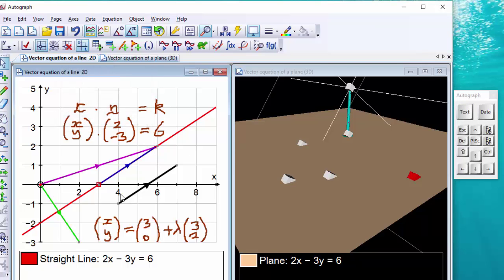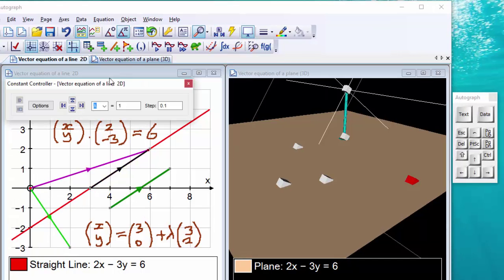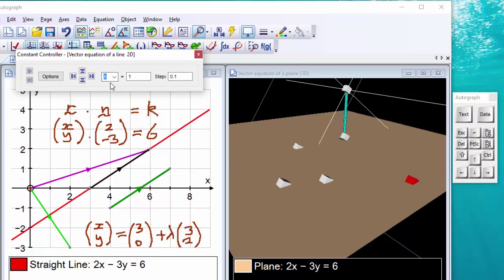Now, lambda will be 1 to start with. Now, if I use the constant controller, I can play around with the value of lambda, and I can reduce it down, for example. And there you can see that for different values of lambda, we are indeed getting all the points along that straight line.